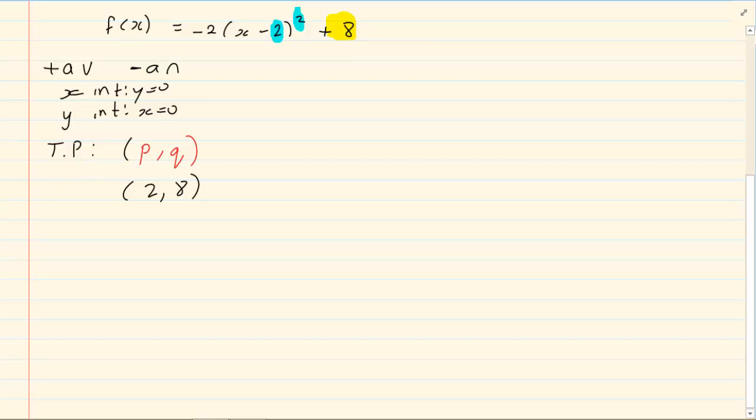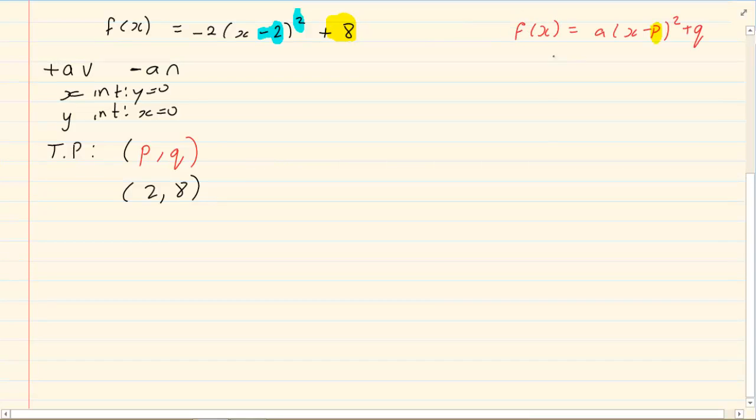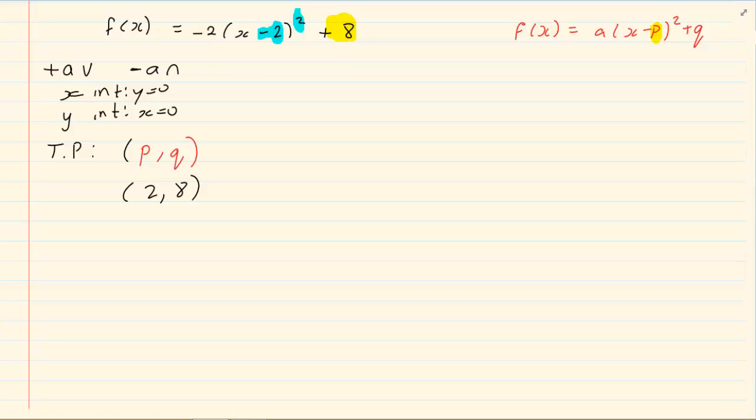What is important is you need to realize that there is a minus sign there. But the standard equation is f(x) is equal to a times (x minus P) all squared plus Q. Now that is the standard equation. Therefore the x is related. But look at the sign. The minus that we have here is the minus that is in the equation, making P a positive.